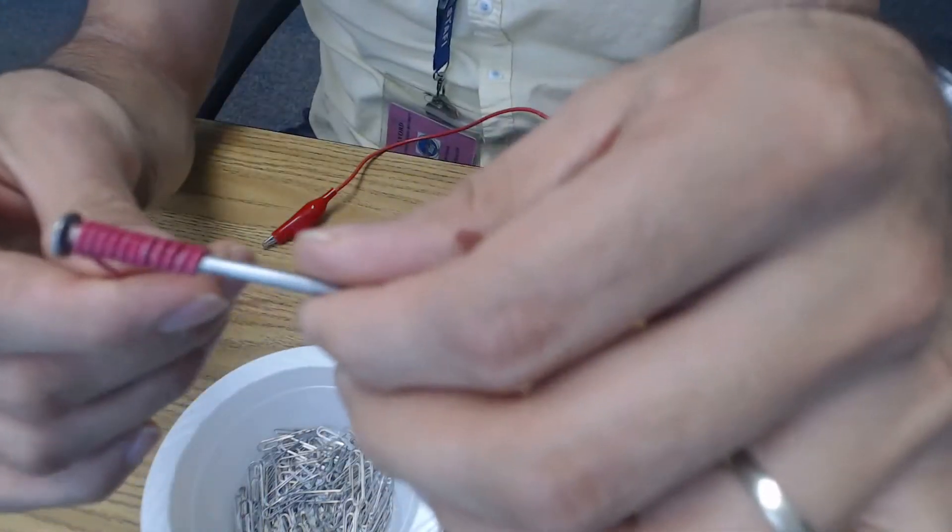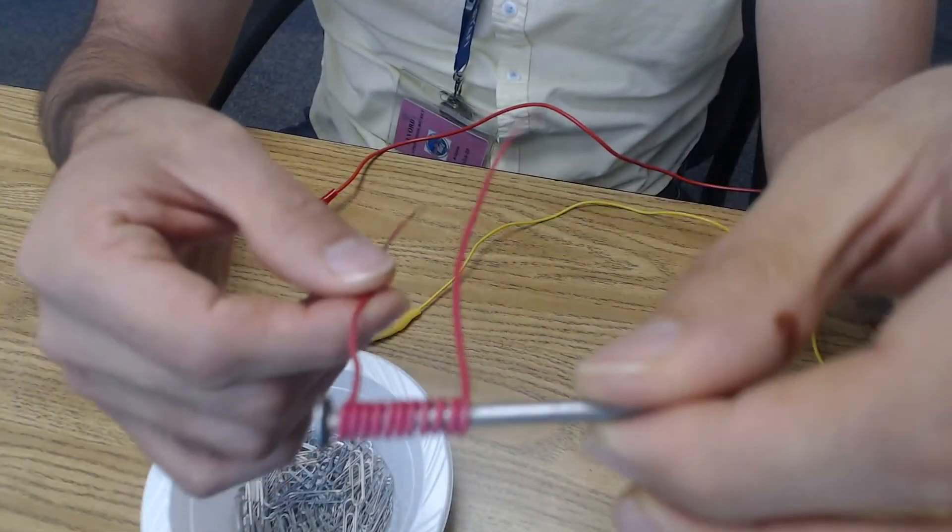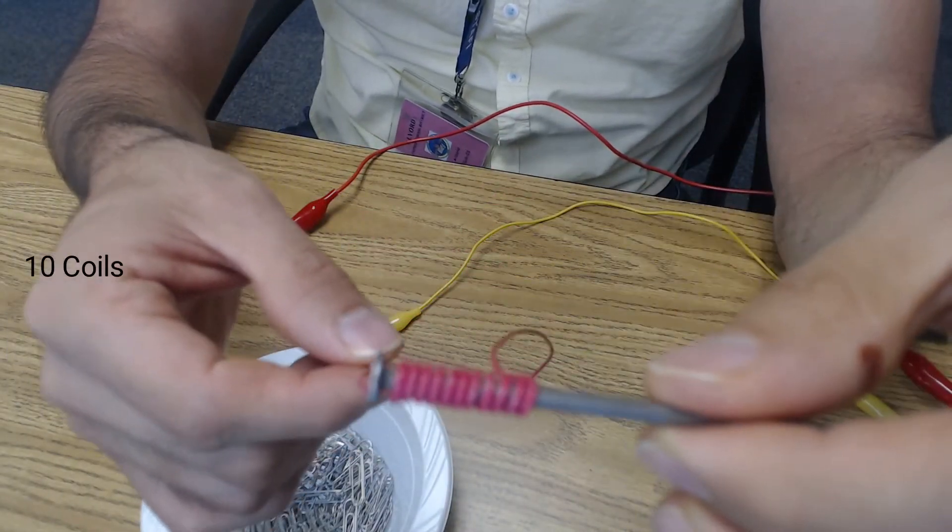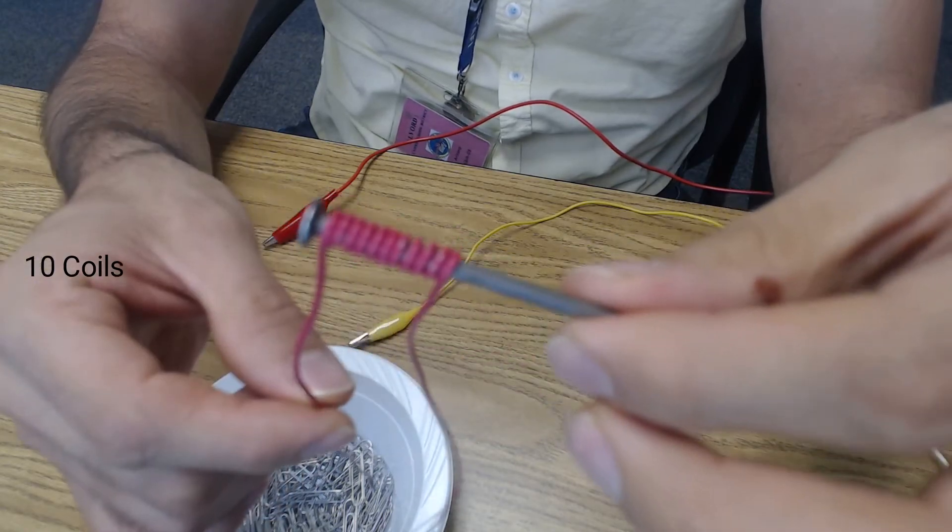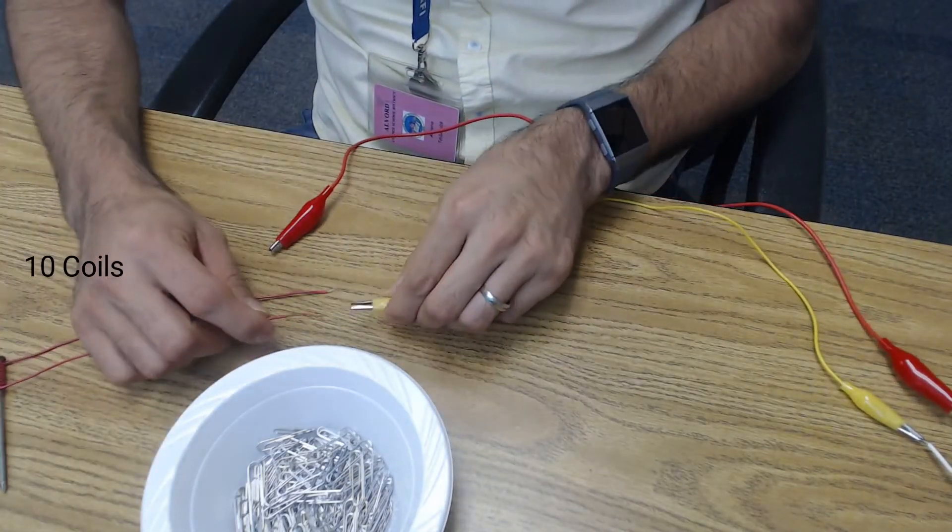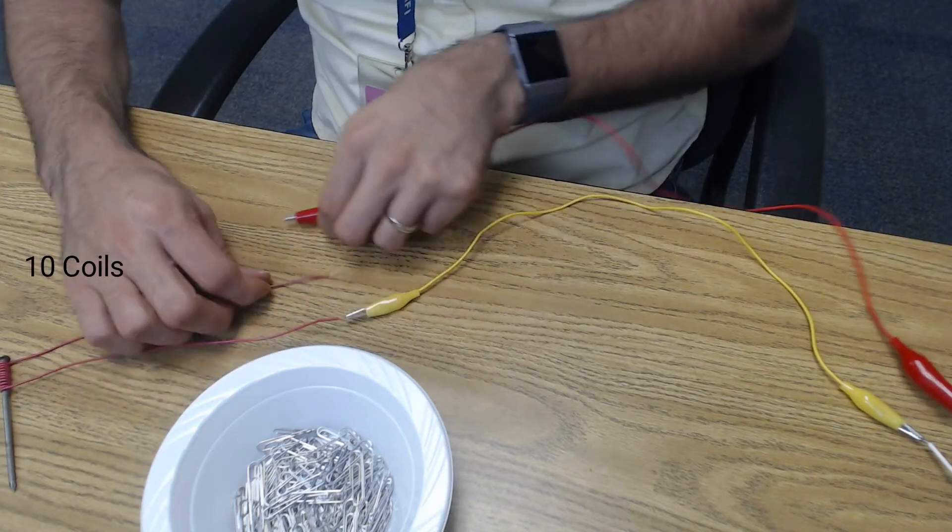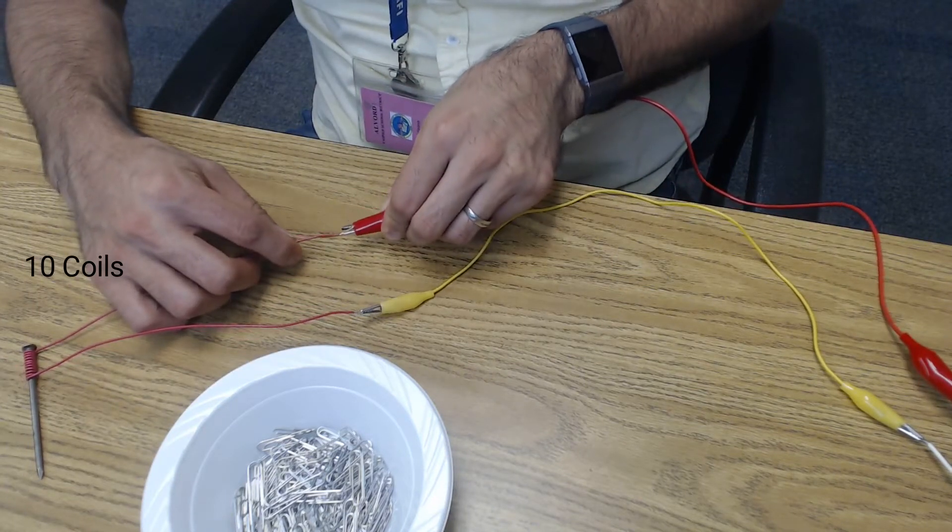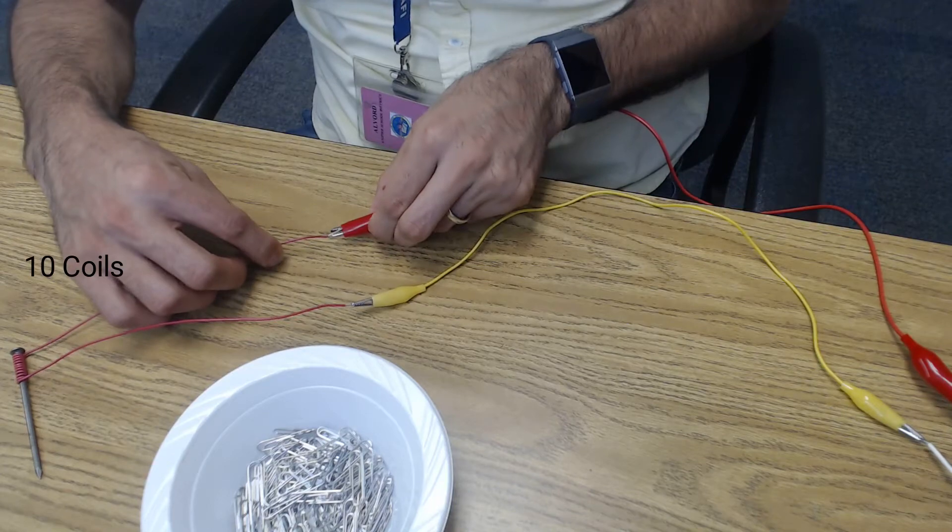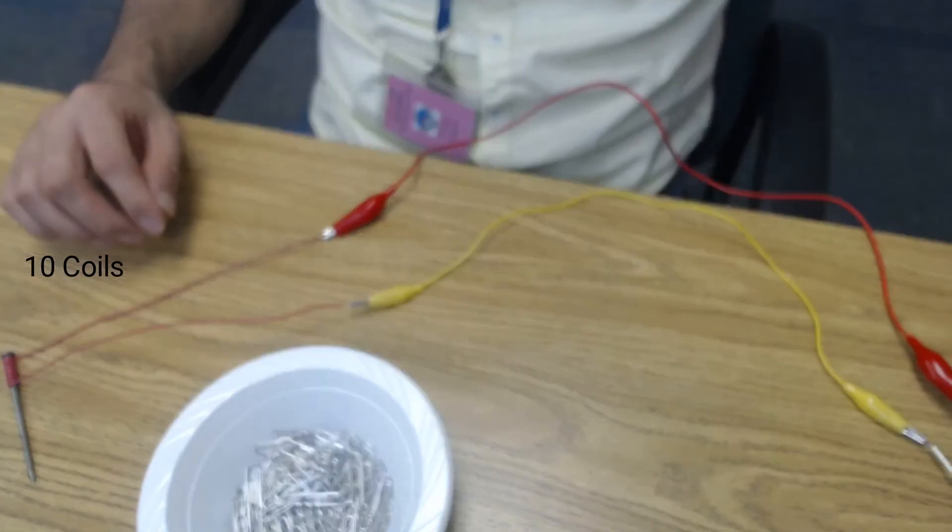All right, in this scenario I have a nail that's wrapped with copper wire and it has 10 coils around it. Let me hook that up. Let's turn on the power.